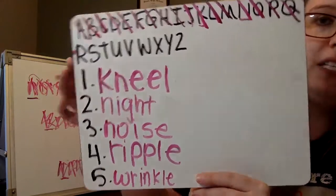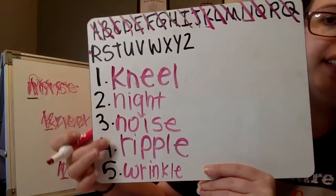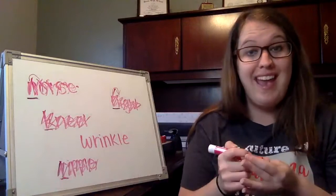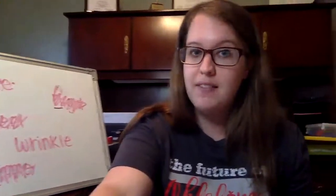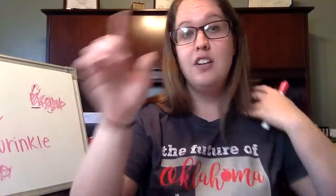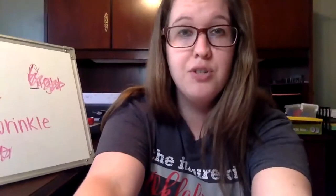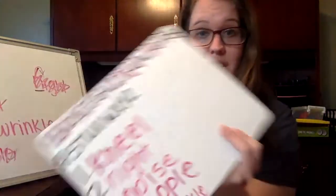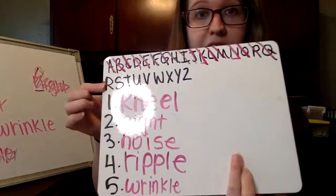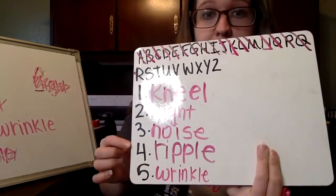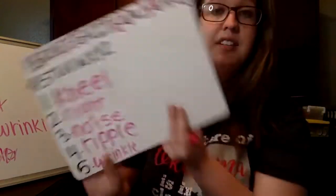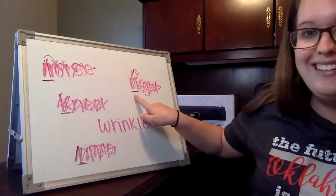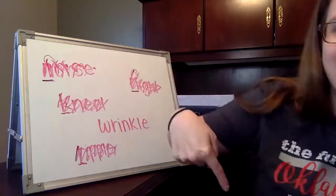So I've put all my words in ABC order: kneel, night, noise, ripple, and wrinkle. Next, I'm going to have you do an assignment. You should already be in Canvas, so underneath there should be a 'Take Quiz' button — push that and try your very best. Remember: step one is to write your alphabet across the top so you can see what letter you're on, then go through and see if there's any word that starts with each letter. If words start with the same letter, like noise and night, go to the next letter to decide the order.